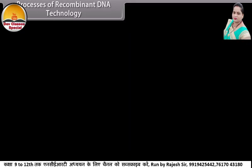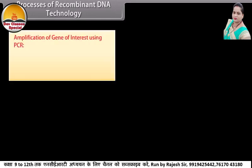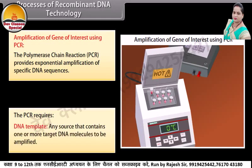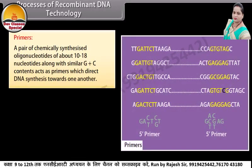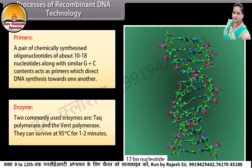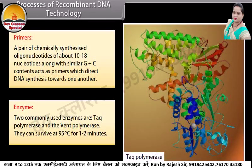Amplification of gene of interest using PCR. The polymerase chain reaction, PCR, provides exponential amplification of specific DNA sequences. PCR requires: a DNA template — any source that contains one or more target DNA molecules to be amplified; primers — a pair of chemically synthesized oligonucleotides of about 10 to 80 nucleotides with similar G+C contents that act as primers directing DNA synthesis towards one another; and enzymes — two commonly used enzymes are Taq polymerase and Vent polymerase, which can survive at 95 degrees Celsius for one to two minutes.